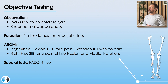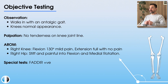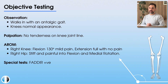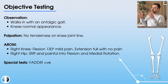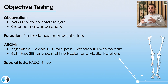Moving on to active range of movement testing: the right knee has 130 degrees of flexion, which causes mild pain, but full extension with no pain at all. Looking further at the right hip, it seems to be stiff and painful on both flexion and medial or internal rotation, and the right hip is quite sore on these movements.